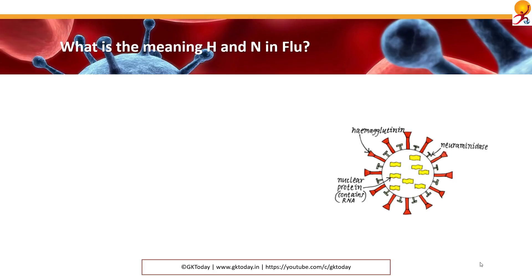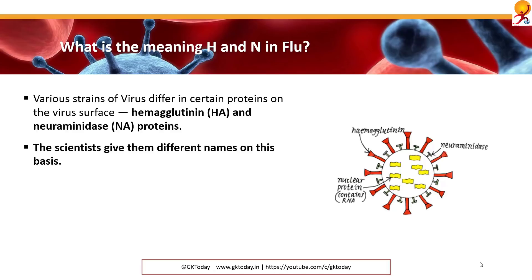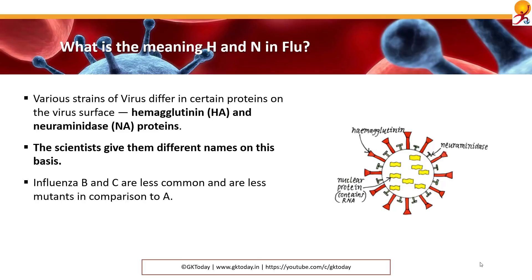What is the meaning of H and N in flu? There are various strains of virus and they differ in certain proteins: hemagglutinin or HA, and neuraminidase or NA proteins. So H stands for hemagglutinin and N for neuraminidase. Scientists give them different names based on this. Influenza B and C are less common and are less mutant in comparison to A.